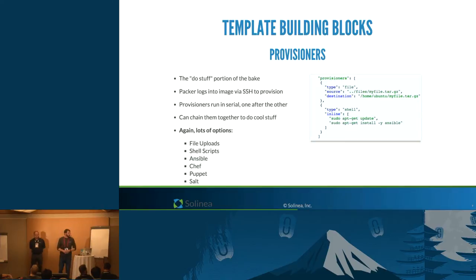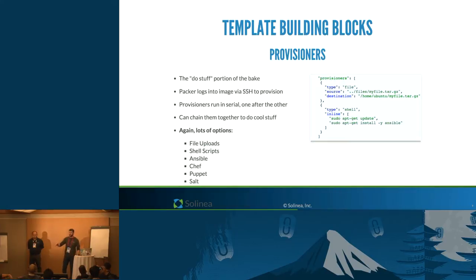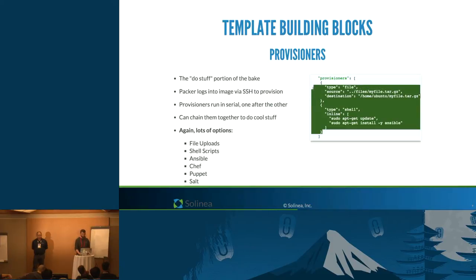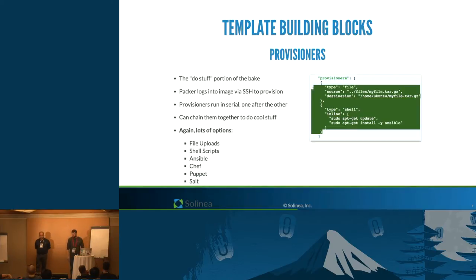The second building block is provisioners — our 'do stuff' portion of the image bake. Packer logs into the instance via SSH and provisions it the way we tell it to. Provisioners run in serial, one after the other, so you chain them together. Options include file uploads, shell scripts, and Ansible playbooks — we'll use all three today. You can also use Chef, Puppet, Salt, whatever you have. In the template, the top provisioner uploads a file to a known path; the second is an inline shell running apt-get update and installing Ansible.